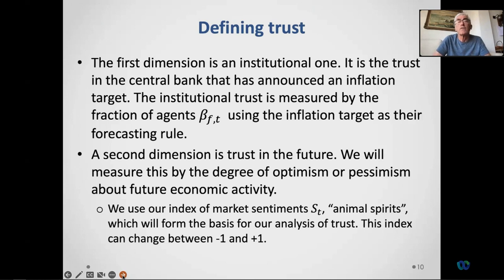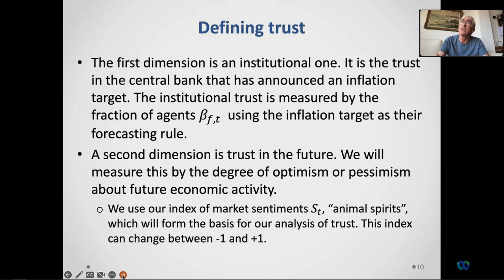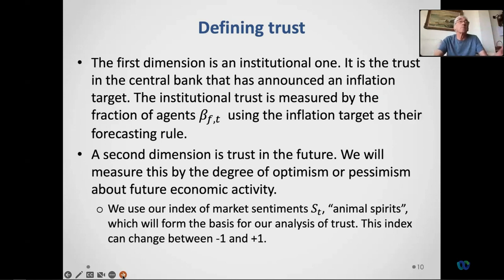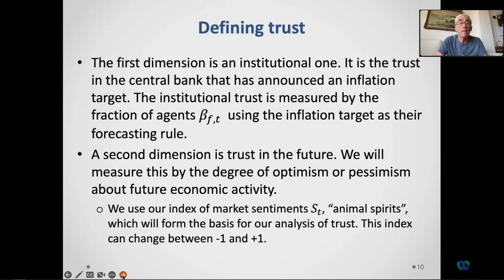Let me now turn to the major topic: trust. We have two dimensions of trust. One is institutional trust — trust in the central bank that has announced an inflation target. We measure this as beta_F: the fraction of agents using the inflation target as their forecasting rule. These are agents who believe the central bank will ensure inflation returns to its target, say two percent. The fraction using that rule is our measure of trust in the central bank.